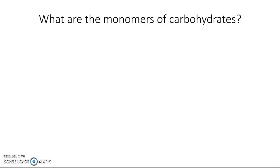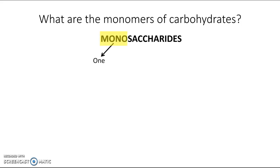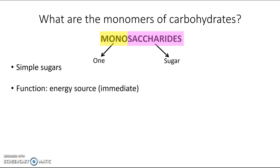Monomers of carbohydrates are molecules called monosaccharides — watch out for the spelling. If you pick it apart, 'mono' is a prefix for one, and 'saccharide' comes from a Greek word root meaning sugar. So these are our simple sugars. In terms of their function, they are a quick energy source for living organisms — they don't need to be broken down into smaller parts to provide energy.